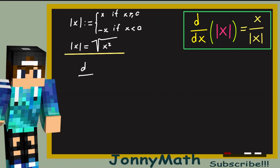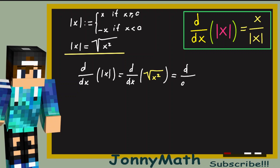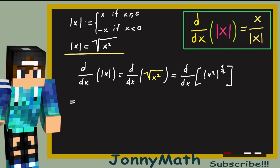So the derivative of the absolute value of x equals the derivative of the square root of x squared, since the absolute value of x and the square root of x squared are equal. This equals the derivative of x squared to the one-half power. To differentiate this function, we can use the chain rule. So this is just one-half times x squared to the one-half minus one power, times the derivative of x squared, that is 2x.